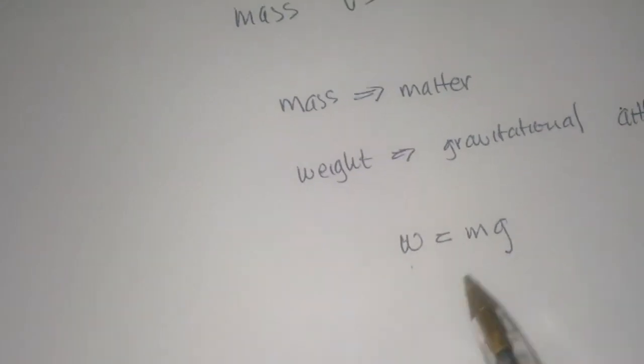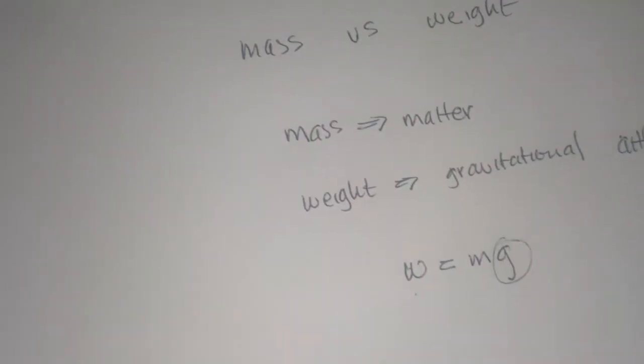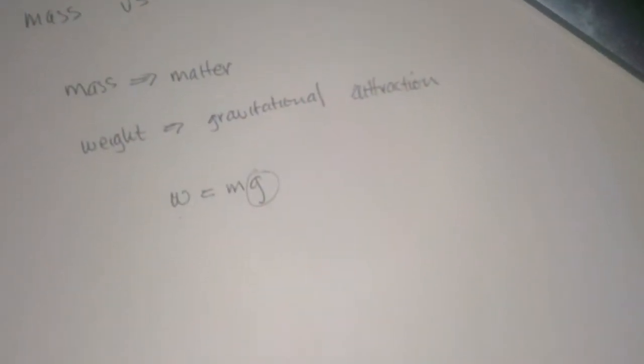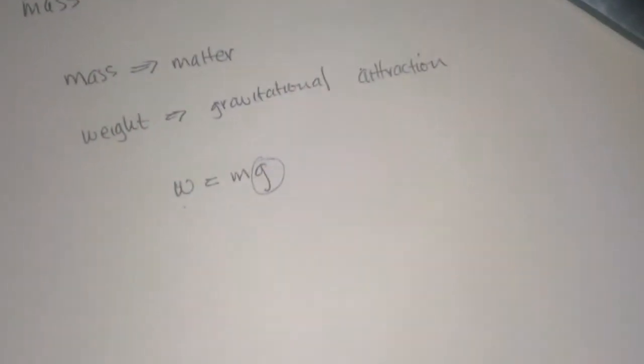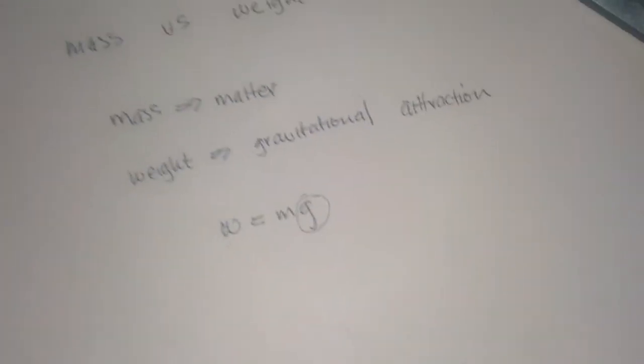Where W is our weight, m is our mass, and g here is our gravitational constant. I'll explain that in a few minutes and we'll see how that makes sense.